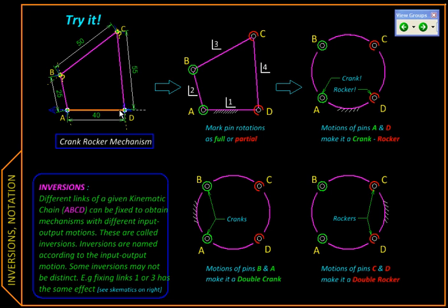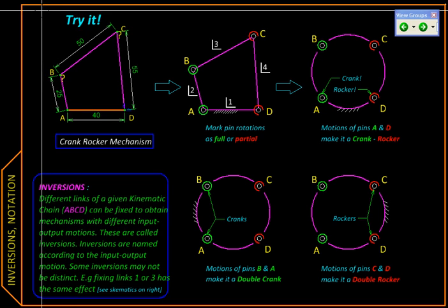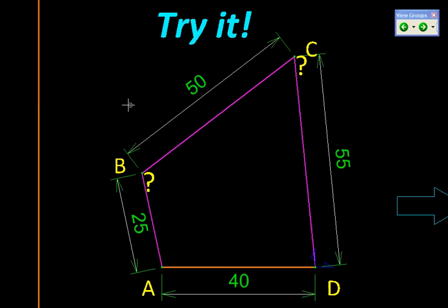Essentially, inversion is nothing but a shift of observer from one link to another, so a different link appears fixed to him or her and a different input-output relationship is observed.